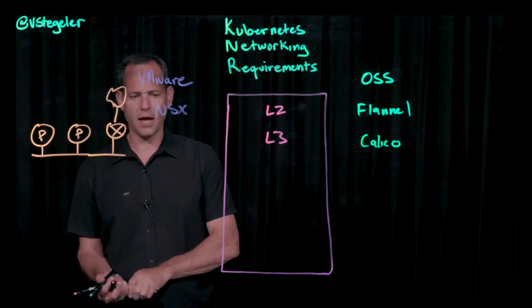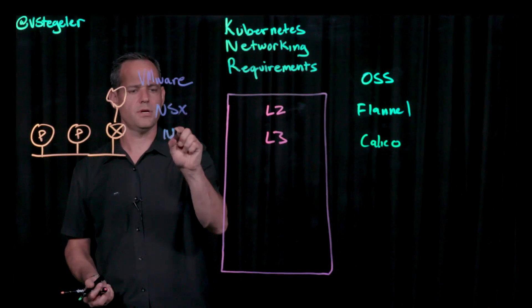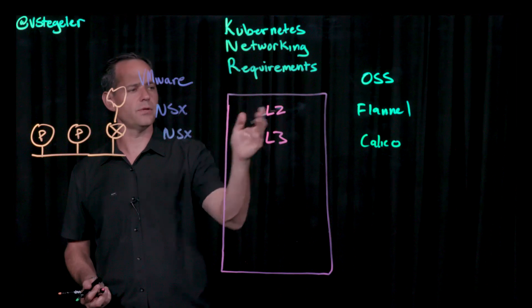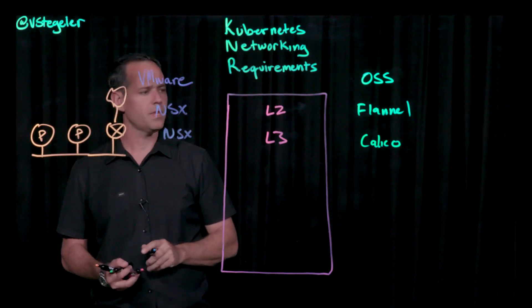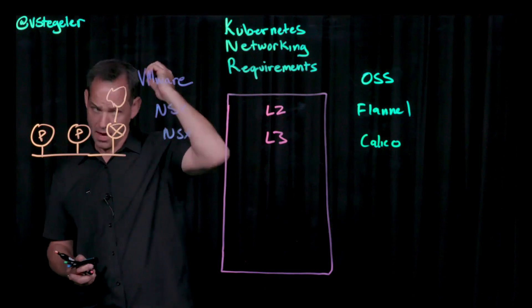And in that case, what you'll need on the open source side is a technology called Calico. And of course, on the VMware side, we're going to continue to leverage NSX here. Because not only can it provide layer two, but it can also provide layer three. And so that'll get me out of the pods.